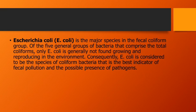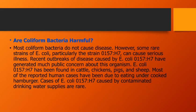E. coli is the major species in the fecal coliform group and one of five general groups of bacteria that comprise total coliforms. Since E. coli is generally not found growing and reproducing in the environment, it is considered the species of coliform bacteria that is the best indicator of fecal pollution and the possible presence of pathogens.